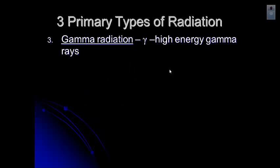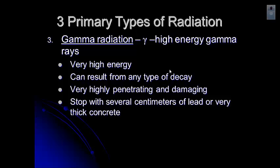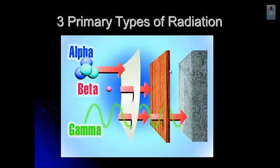There's also gamma radiation. Those are high energy gamma rays, extremely high. They're very high frequency at the high end of that electromagnetic spectrum. They can result from any type of decay. Very highly penetrating and damaging. You can stop those with several centimeters of lead or very thick concrete. This picture shows you how penetrating each of those are. Alpha can be stopped by paper. Beta by wood or several sheets of aluminum foil. Gamma have to be stopped by concrete.